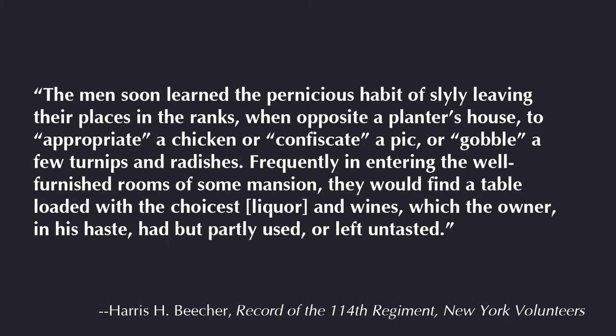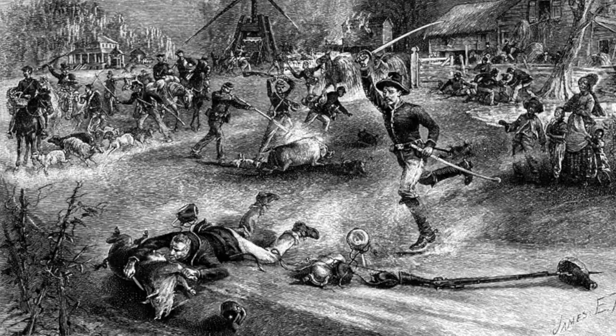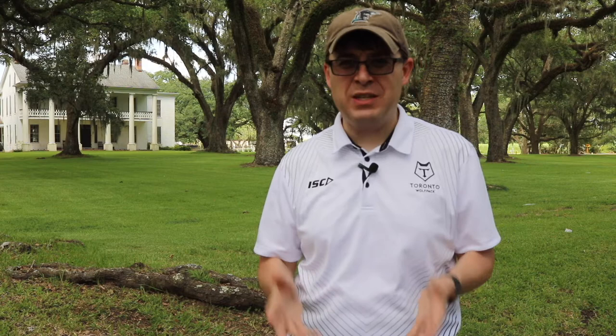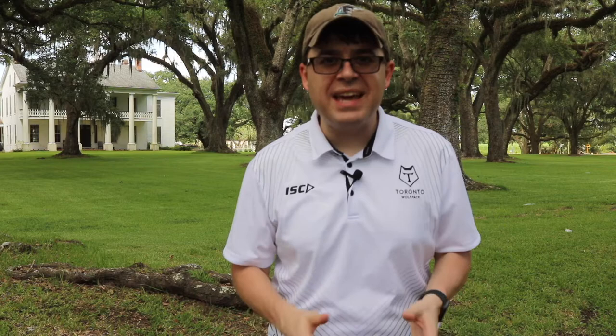With 18,000 men on the march, they did a little more than just gather food. The 114th New York Volunteers described how "the men soon learned the pernicious habit of slyly leaving their places in the ranks when opposite a planter's house to 'appropriate' a chicken, 'confiscate' a pig, or 'gobble' a few turnips and radishes. Frequently in entering the well-furnished rooms of some mansion, they would find a table loaded with the choicest liquor and wines." The account describes widespread looting, with men seen carrying antique clocks and even a family bible from a plantation home — though the thrill of looting wore off quickly when they realized they'd have to carry those trophies throughout the entire campaign.